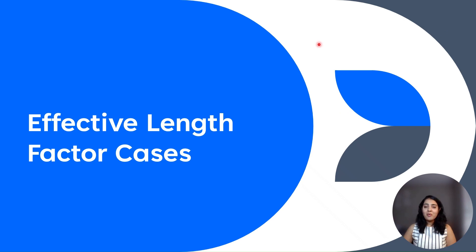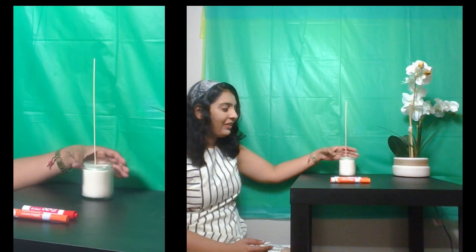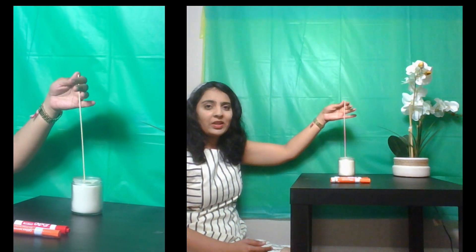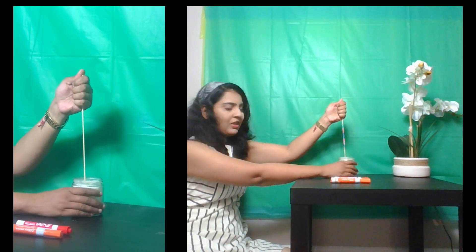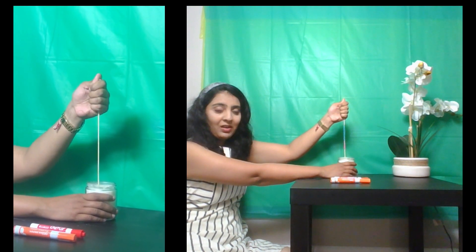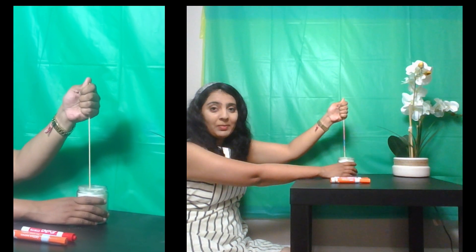So now we will see effective length factor cases. These cases depend on the support conditions or end conditions of the column. Based on that condition, the effective length factor changes. So let's see. This one end is fixed and this end we will give it as a fixed support. For that I am using my hand as a support. So I will hold this really tight, and both are fixed supports. So this is both ends fixed column. So let's apply load.